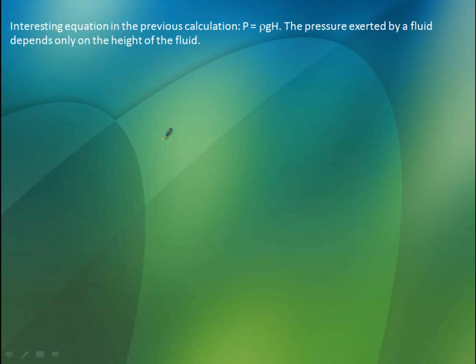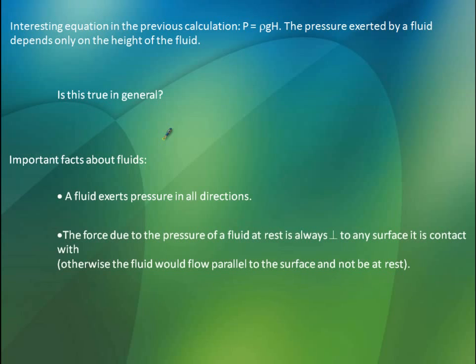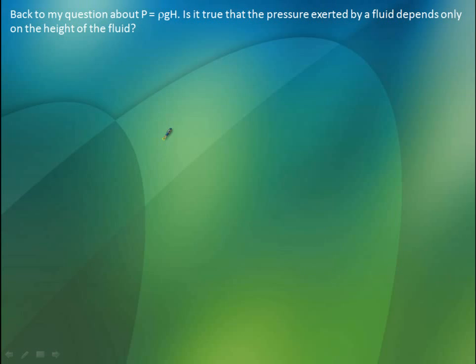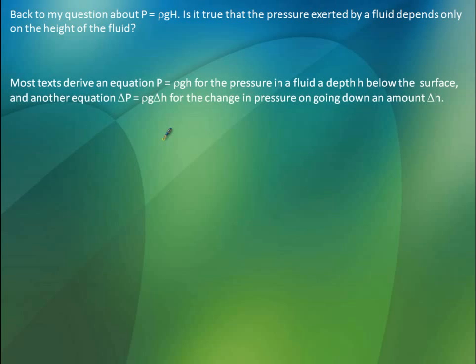So interesting equation. Pressure equals rho GH. Pressure exerted by a fluid depends only on the height of the fluid. Is this true in general? Pretty much. Here's some important facts about fluids. A fluid exerts pressure in all directions. The force due to the pressure of a fluid at rest is always perpendicular to any surface in contact with. If it wasn't, the fluid would just flow until it eventually came to rest somewhere else. So back to that question. Is it true? Yeah. Pretty much. Yes. It is true. Most textbooks derive an equation for the pressure in a fluid at depth below the surface. So if I have a glass of water and we put an object in here, we want to know what the pressure is right there. We just find that H.